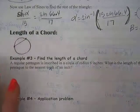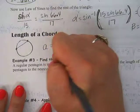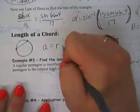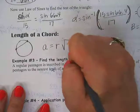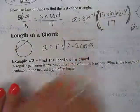Okay, so the formula to find the length of a chord is A equals R, which is radius, times the square root of 2 minus 2 cosine alpha.